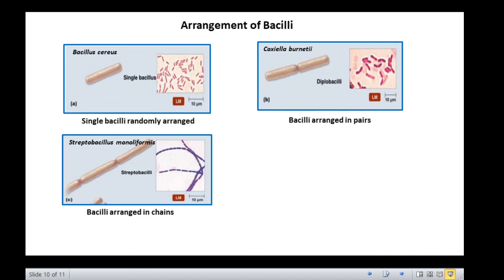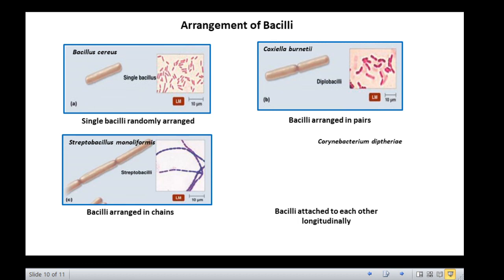Sometimes the rod-shaped bacteria divide longitudinally and remain attached to each other. This arrangement is exhibited by Corynebacterium diphtheriae and is called palisade arrangement, and resembles a pack of matchsticks kept together or a fence around your home.